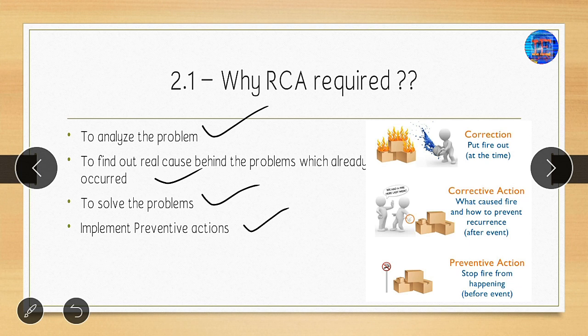For example, if a fire happens at a place, the immediate action is to stop the fire — this is the correction. The corrective action is what we do after that: for instance, if the fire was caused by a leakage of flammable material, we stop that leakage. The preventive action ensures it does not happen again in the future. This is the major difference between correction, corrective action, and preventive action.